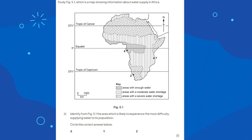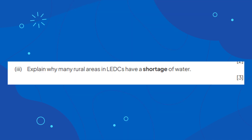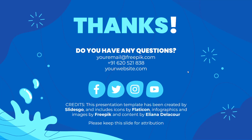This is one last activity. The mark scheme is currently locked behind a paywall, but if you want it, you can go to Save My Exams, geography 0460 CIE, and it will give you the answers there. That's all — thank you.